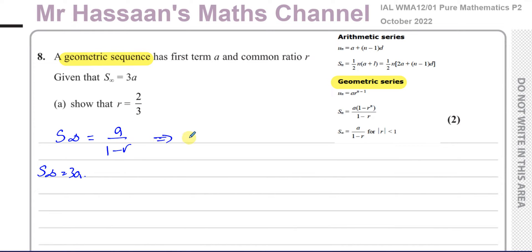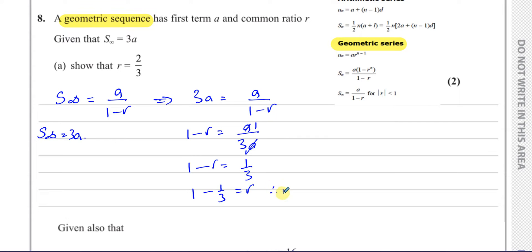So if we do this, we're going to have 3A equals A over 1 minus R. If we rearrange this to make R the subject, we can cross-multiply. So you have 1 minus R equals A over 3A, and the A's cancel. So you're left with 1 minus R is equal to one-third. Therefore, if we add R to both sides and subtract one-third, we have 1 minus one-third equals R. So therefore, R is equal to two-thirds. That's probably the best way of answering this question.